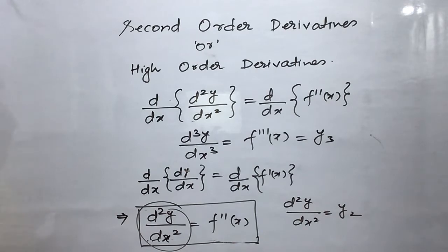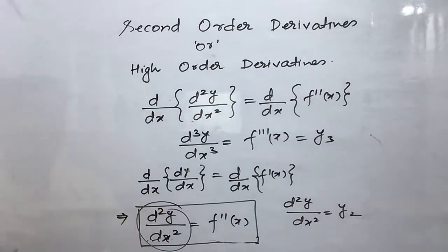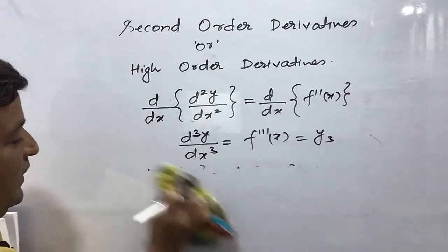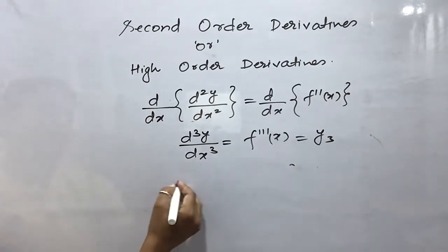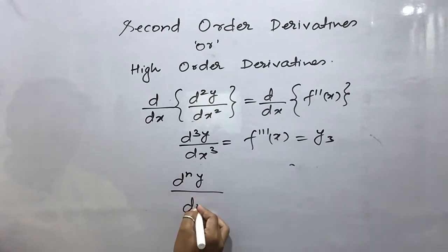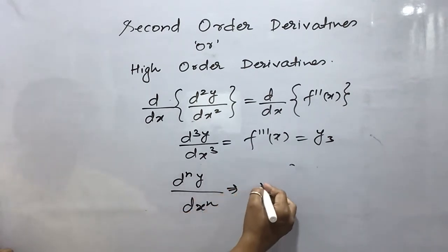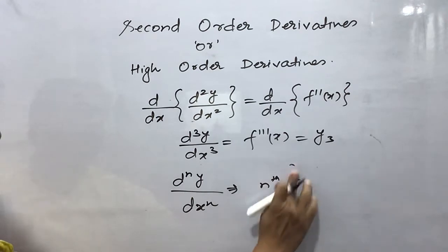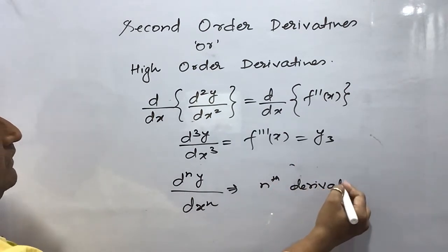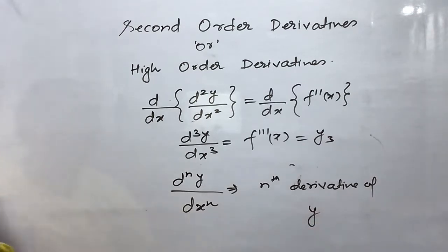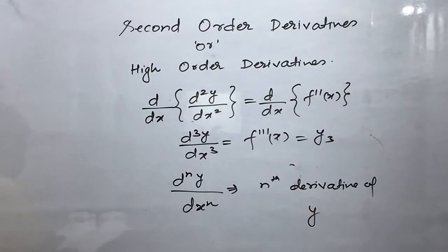What f''(x) becomes — the way to write it further is d³y/dx³, and it will become f'''(x), and we represent it by y₃. So just as we had second-order, this is called third-order. In this way we can take it to 4th, 5th, 6th, 7th orders further. If we want to write it generally, we write dⁿy/dxⁿ — it will be known as the nth derivative of y.